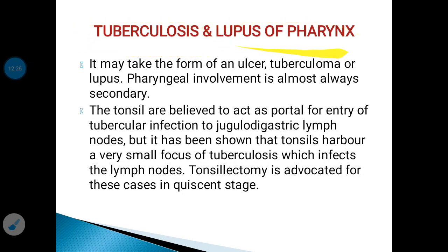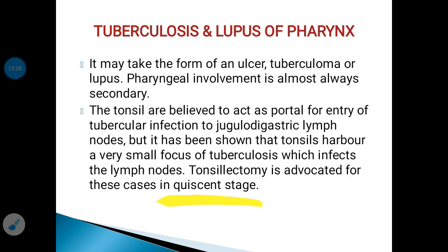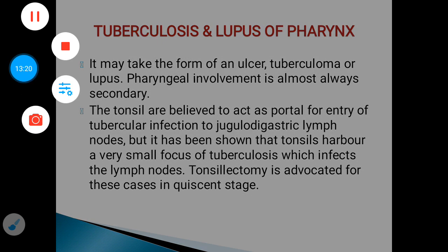Tuberculosis or lupus of the pharynx takes the form of an ulcer, tuberculoma, or lupus. Pharyngeal involvement is almost always secondary. The tonsils are believed to act as a portal of entry for tubercular infection — from the tonsils to the jugulodigastric lymph nodes. It has been shown that tonsils harbor a very small focus of tuberculosis that infects the lymph nodes. Tonsillectomy is advocated for these cases in the quiescent stage. With this, I end the topic of pharyngitis. Thank you.